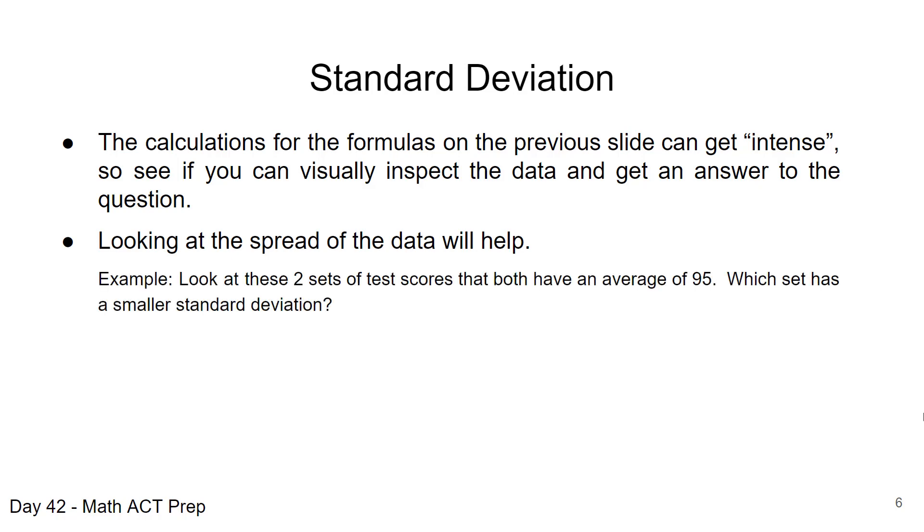So take a look at this example. We say, look at these two sets of test scores that both have an average of 95. Which set has a smaller standard deviation? So we're told some important information here. We could calculate it. But each of these two data sets has an average of 95.